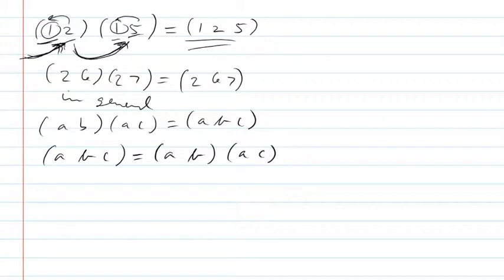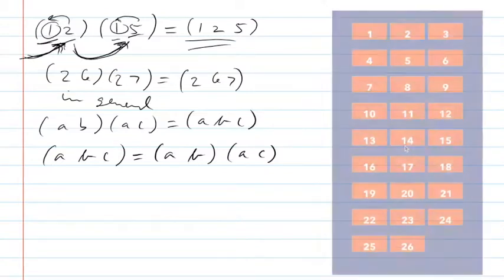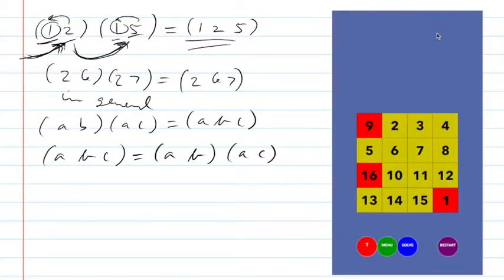One place this will be useful is in the app at puzzle number three. In puzzle three, the legal move is that you can swap any two things. Looking at it, the thing in position one — which is a nine — wants to go to position nine. The thing in position nine wants to go to position 16, and the thing in position 16 wants to go to position one.